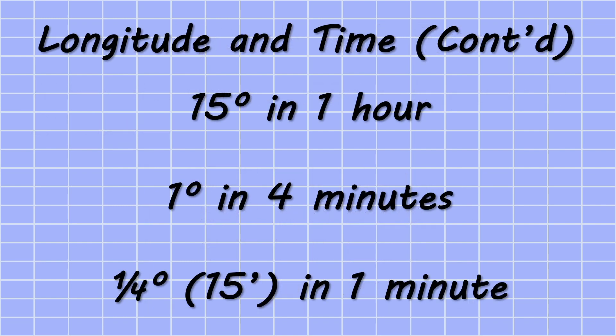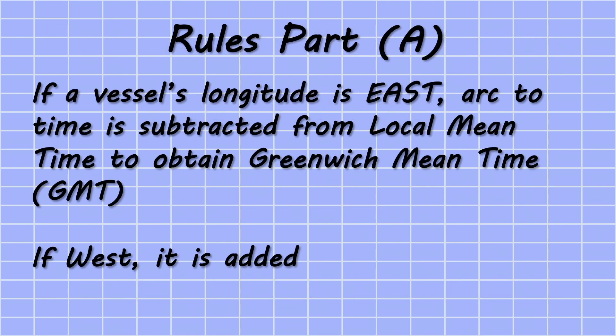If required we can further subdivide these times by saying that one degree is four minutes, all the way down to a quarter of a degree — or 15 minutes of longitude — is equal to one minute of time.